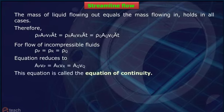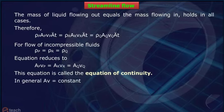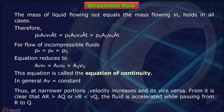This equation is called the equation of continuity. In general, AV = constant. Thus, at narrower portions, velocity increases and vice versa.